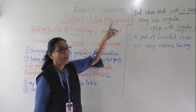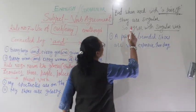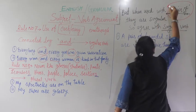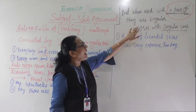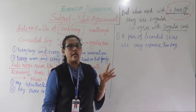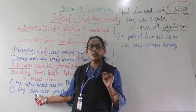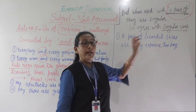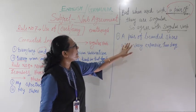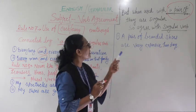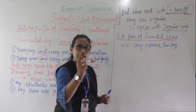But there is one important thing. When these nouns are used with 'a pair of,' they become singular. So they take a singular verb — they agree with a singular verb. For example, shoes normally takes a plural verb, but when we say 'a pair of branded shoes,' it takes a singular verb.